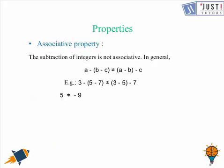Now let's come to next property which is associative. So the subtraction of integers is not associative in general. We can say that a take away b take away c is not equal to a take away b take away c. So let's put some integers for a, b, c. 3 take away 5 take away 7 is not equal to 3 take away 5 take away 7, because the left hand side would give us 5 and the right hand side would give us 9, which are not equal.